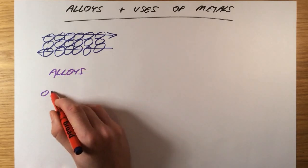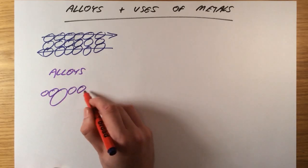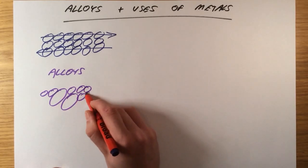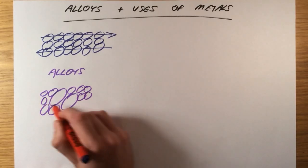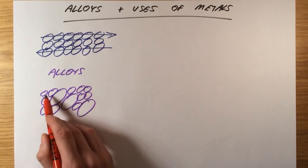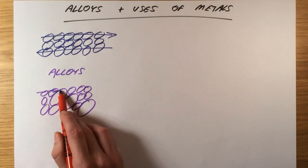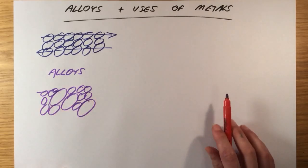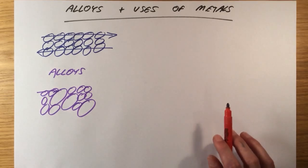In an alloy there are different sized particles in the structure of the metal and what they do is disrupt the layers. So now if I were to try and slide this layer it would not be able to slide over here, and this means the metal is going to be much harder or less malleable.